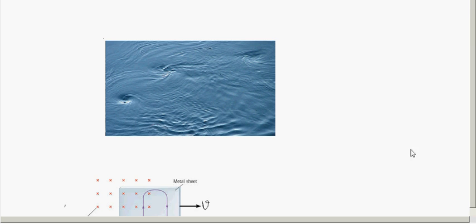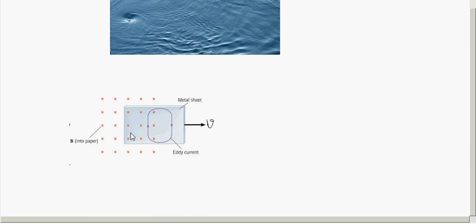For example, consider a metal sheet. We are pulling this metal sheet out of a magnetic field — shown here as a cross field, meaning B is directed into the paper. As we pull out the metal sheet, it is subjected to a changing magnetic flux. Because of this change in flux linking the metal sheet, a current gets induced within this bulk piece, and that circulating current is called an eddy current.